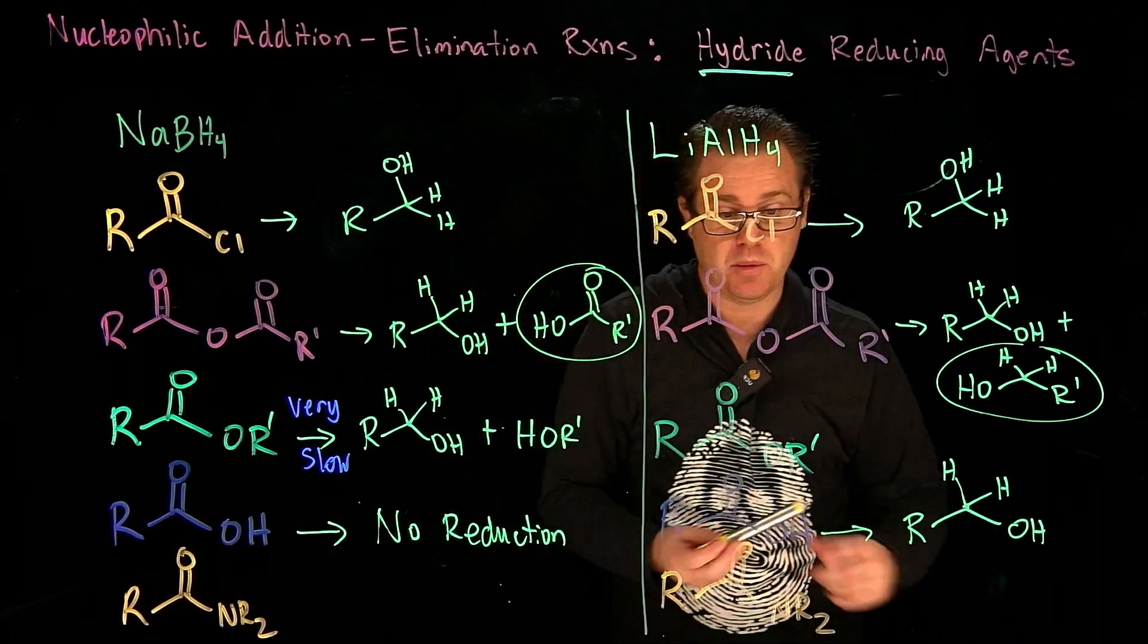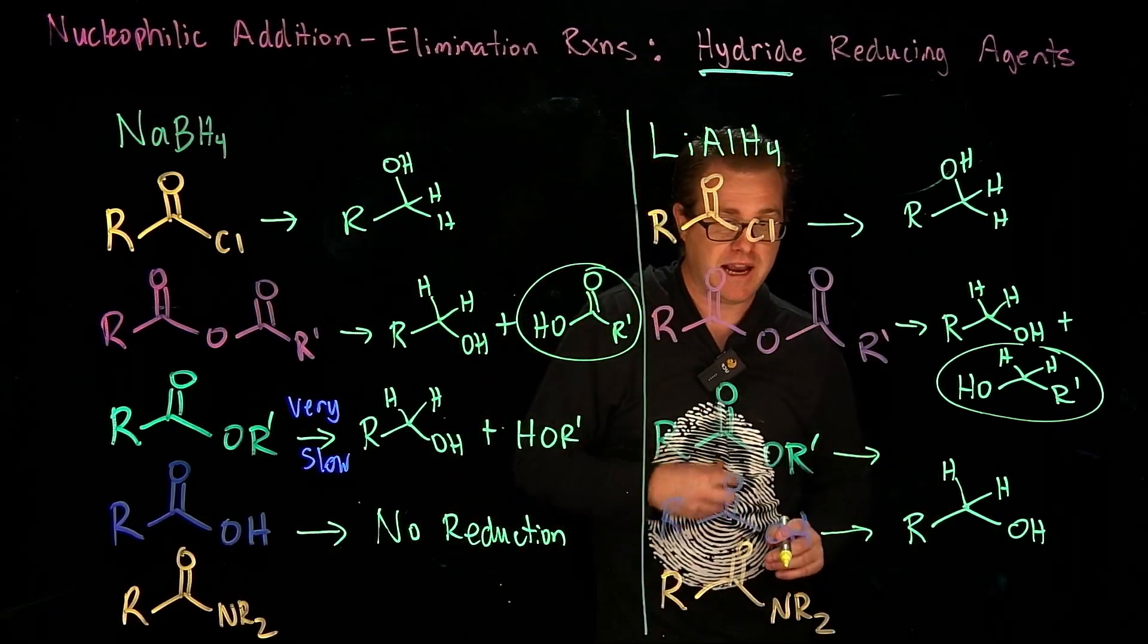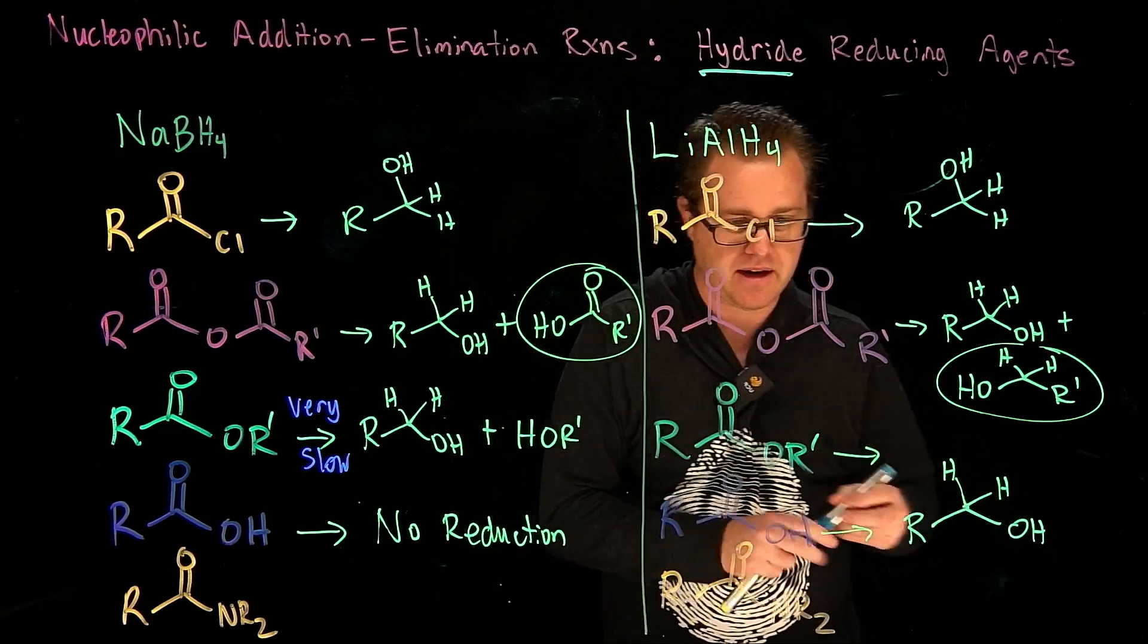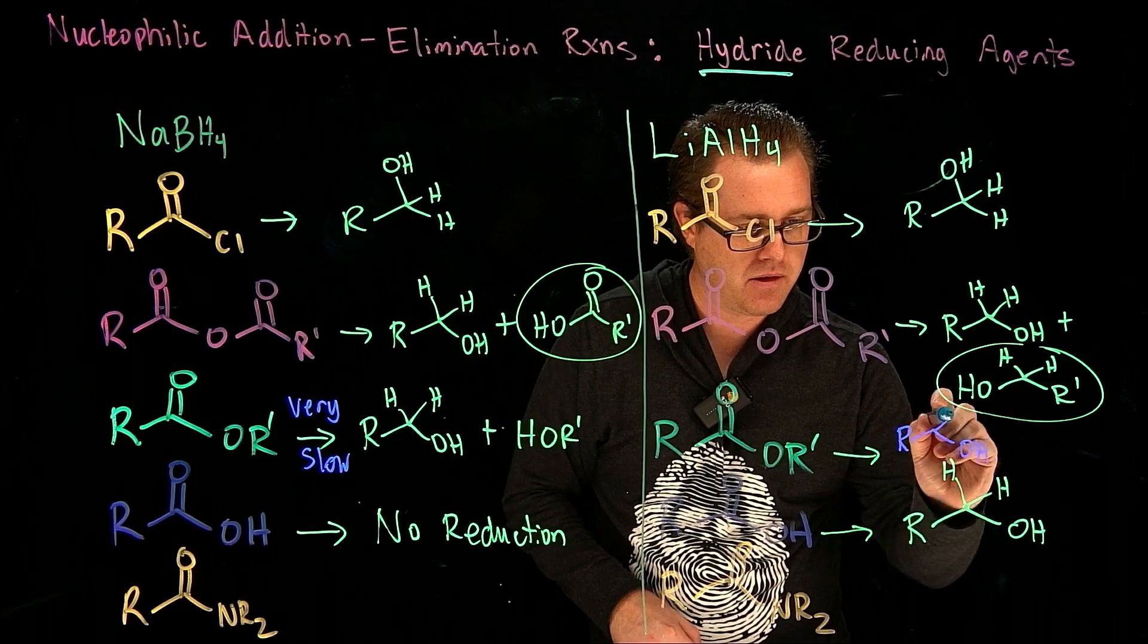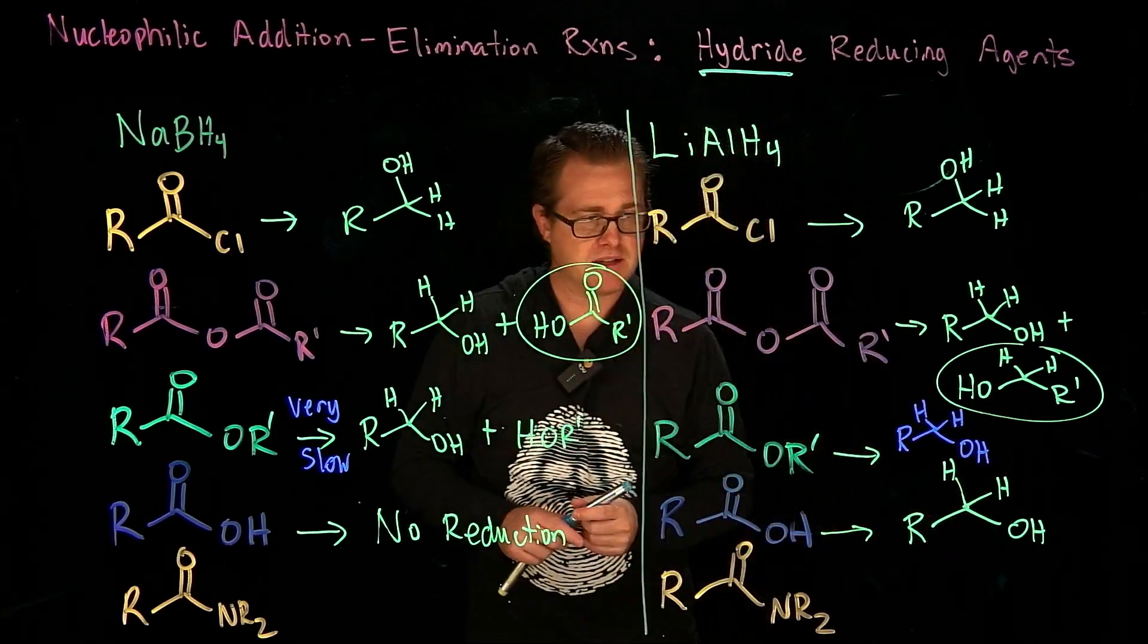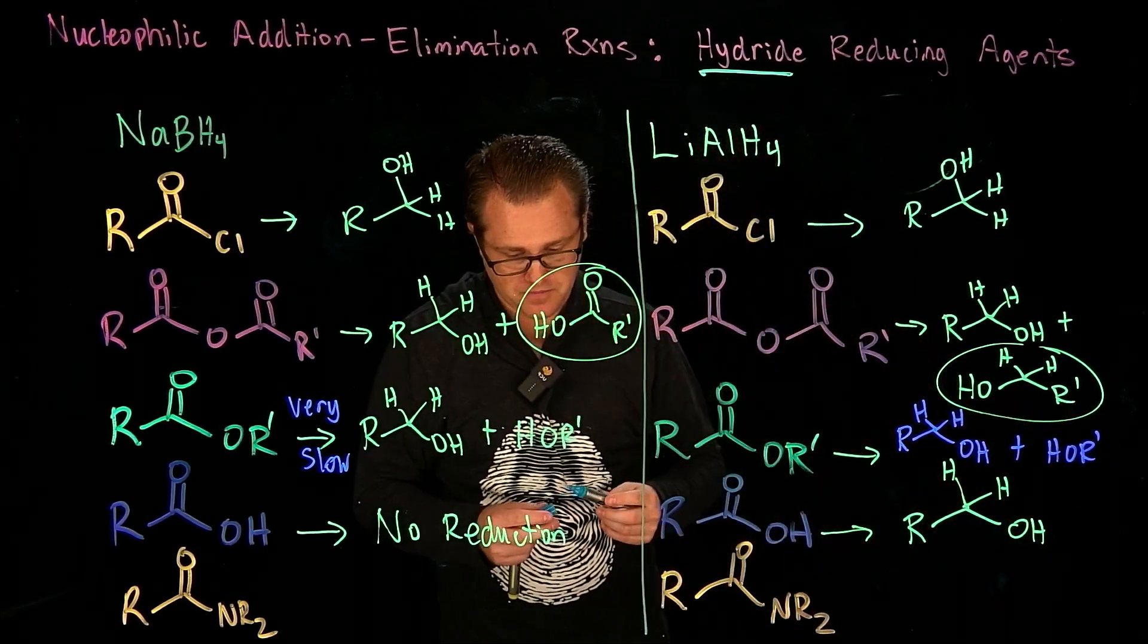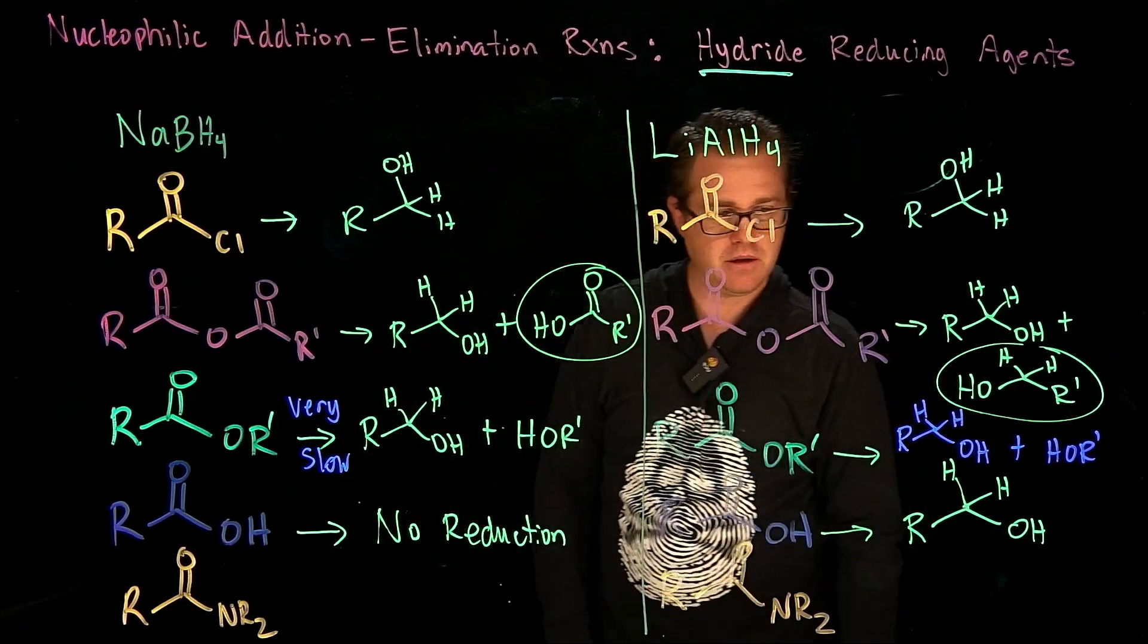People do not reduce esters with sodium borohydride because it's just so slow. But lithium aluminum hydride is a much stronger reducing agent. So that does work very fast and very efficiently. It just generates that alcohol plus the OR prime.